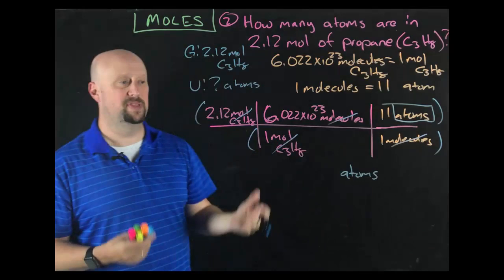Now the rest of it is just math. So in this case, everything in the numerator, so 2.12 times 6.022 times 10 to the 23rd times 11, all of that, divided by everything on the bottom. Now everything on the bottom in this case happens to be 1, which makes it a lot easier. But if you remember the last problem, what was on the bottom was Avogadro's number. And so that obviously is going to make things a lot different. Okay, so what's our answer here? We've got 1.40 times 10 to the 25th atoms. Again, my significant figures here are 3 because I had 3 here, and that's where we're going to go to.